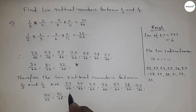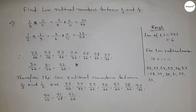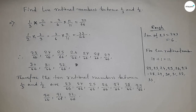So this is the process to find 10 rational numbers between 1/3 and 1/2. That's all. Thanks for watching. Please subscribe, like, and comment.